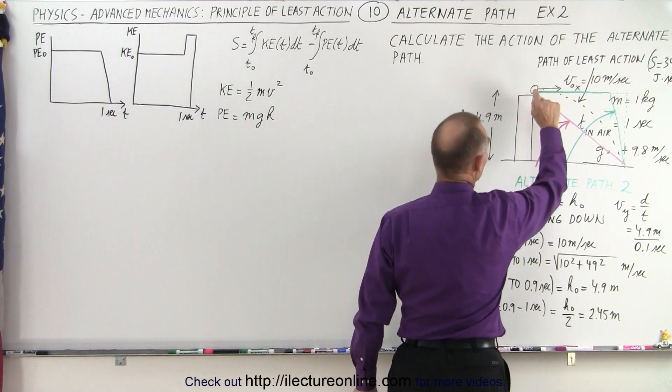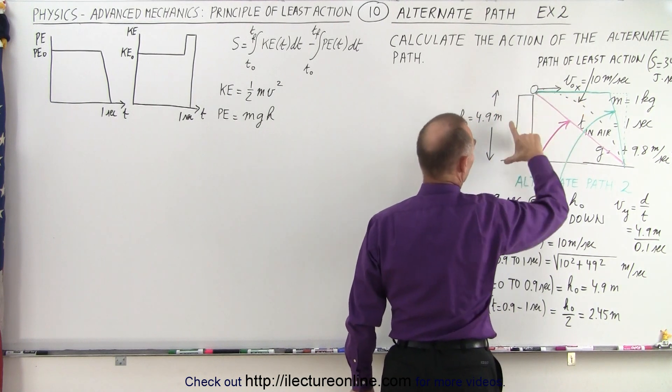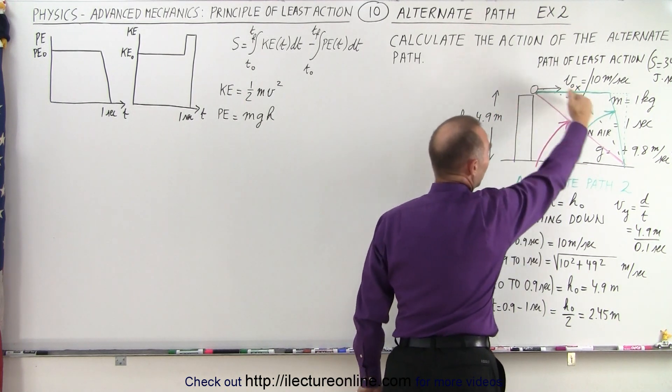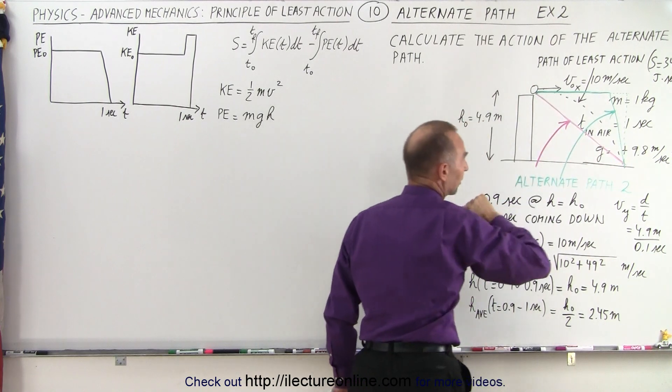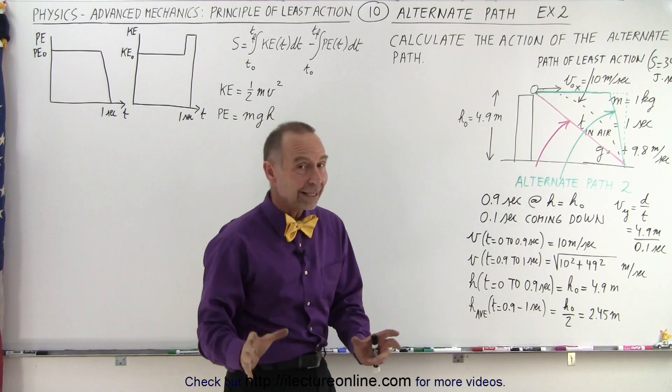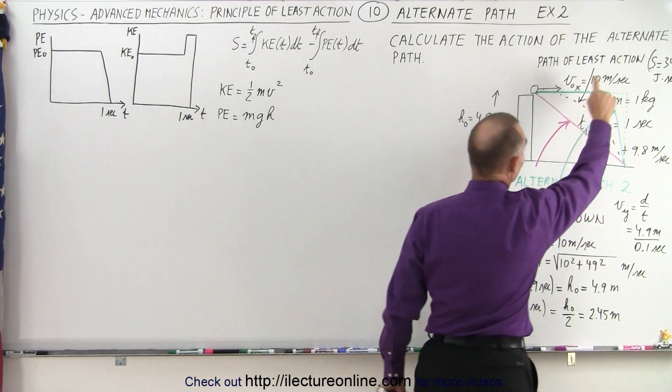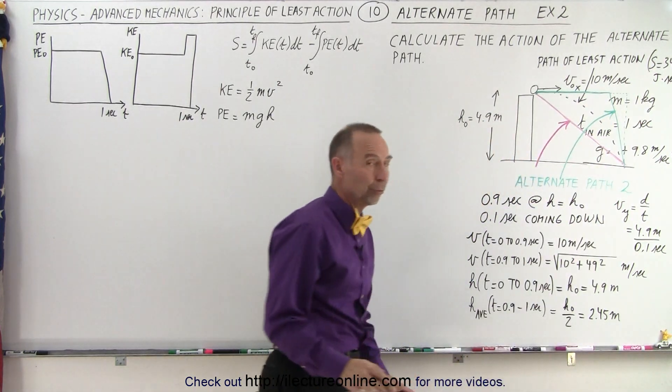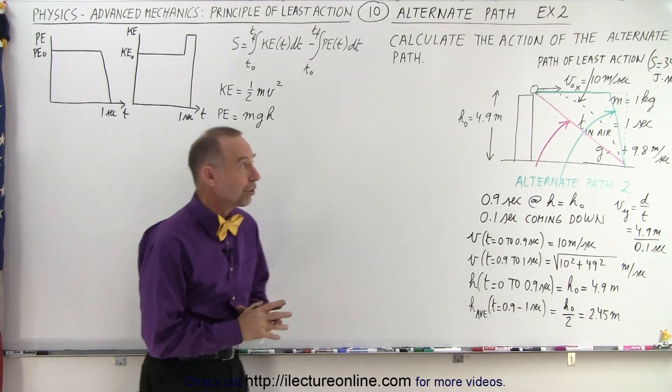When we throw a projectile out at 10 meters per second from a height of 4.9 meters, we know the projectile will take this parabolic path, land on the ground one second later, 10 meters away. When we calculated the action for that path, the path of least action, we ended up with 34 joules per second a couple of videos ago.